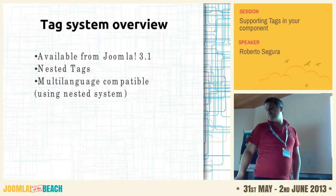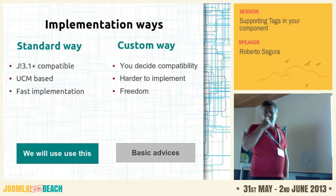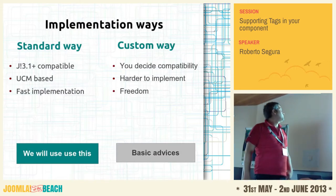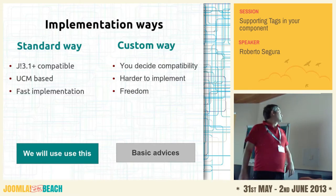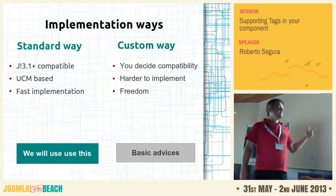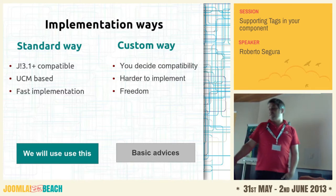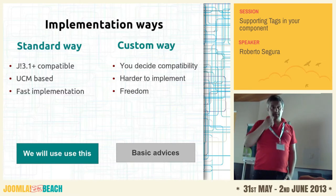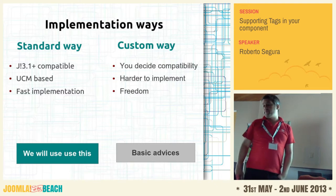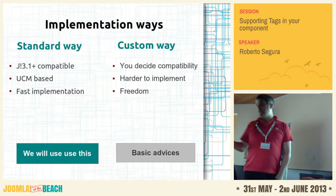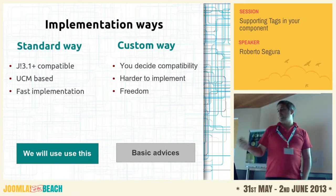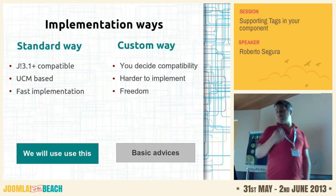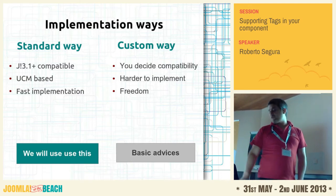For multi-language, you have to create a parent tag for the languages — so you can have English and from there create children tags for that language. There are basically two ways to use the new tag system: the standard way, which is how core uses it with the UCM integrated system — it's really fast to implement — and you can also do it your own way, which requires backward compatibility for Joomla 2.5 components. It's harder to implement but gives you more freedom.